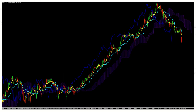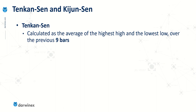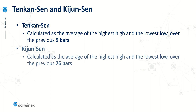Expanding this chart a little, this is what Ichimoku looks like. We have the Tenkan-sen in yellow here, and the Kijun-sen in blue. The calculation that sits behind these is very similar. For the Tenkan-sen, it's calculated as the average of the highest high and the lowest low over the previous nine bars. For the Kijun-sen, it's identical, other than the fact that the previous 26 bars are used.